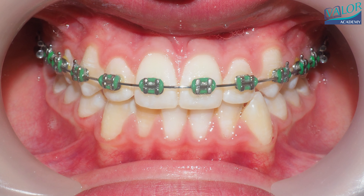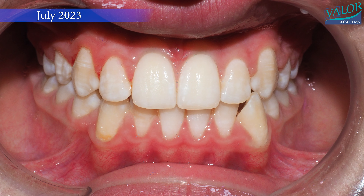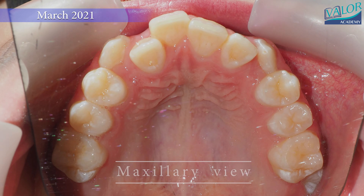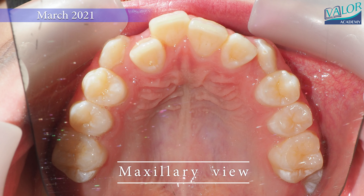Once the crossbite is corrected, the lower teeth will bite behind the maxillary teeth, and each time the mouth closes, the lower jaw will be restrained.